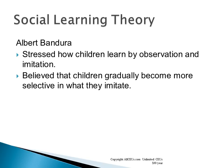Albert Bandura's social learning theory says that children learn by observation and imitation. If they see someone do something and get a reward, they're more likely to do it; if they see someone get punished, they're less likely to. There is a behaviorist element, but also a significant cognitive component. Bandura believed that children gradually become more selective in what they imitate.